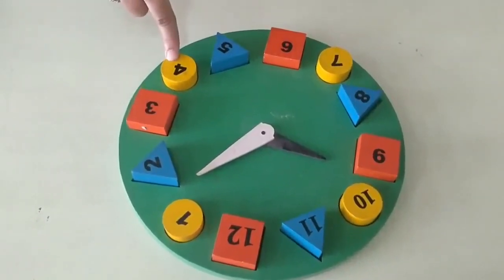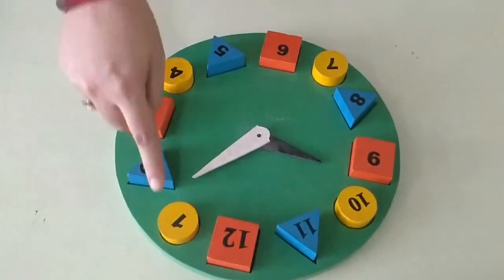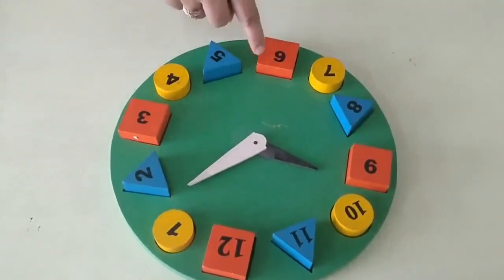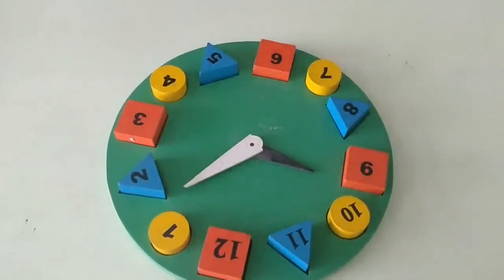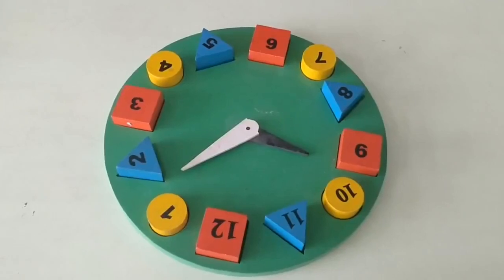Then again number four is yellow. It means these three colors are being repeated. Yellow, blue, red. Yellow, blue, red and same. So here these colors on the numbers are forming a pattern. Which is a repeated pattern.